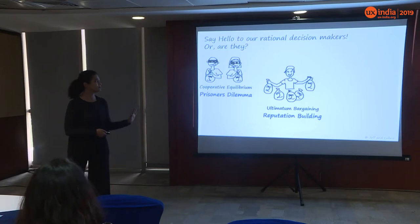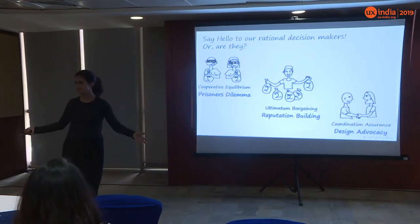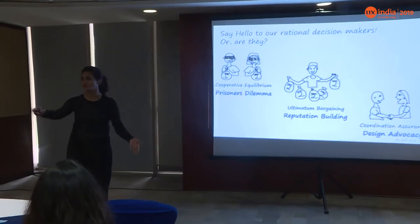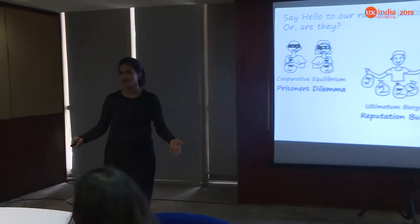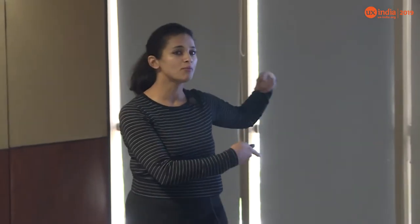We're going to talk about three different types of games — cooperative equilibrium, ultimatum bargaining, and how both of these tie into the design advocacy game, which is an interesting example.